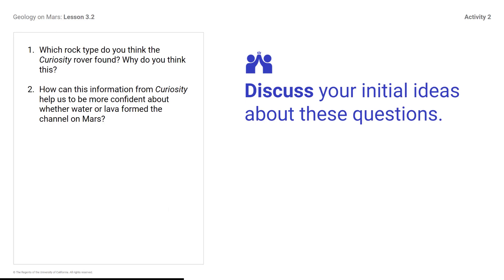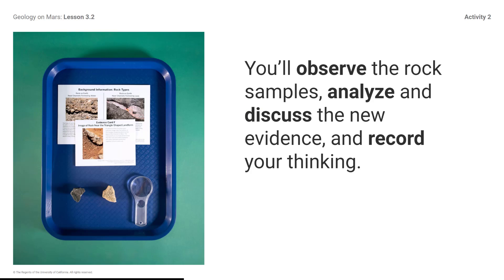Discuss your initial ideas about these questions: Which rock type do you think the Curiosity rover found? Why do you think this? How can this information from Curiosity help us be more confident about whether lava or water formed the channel on Mars? You will observe the rock samples, analyze and discuss the new evidence, and record your thinking.